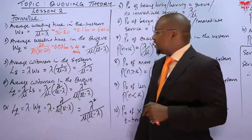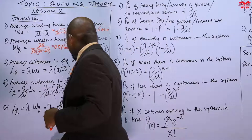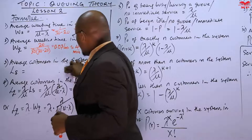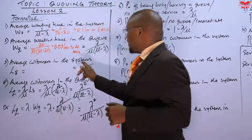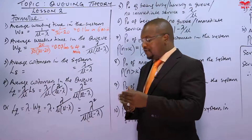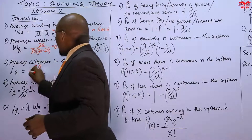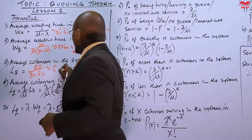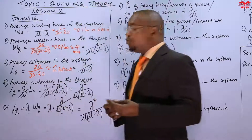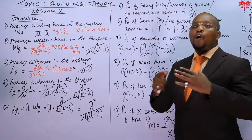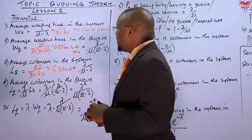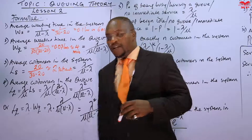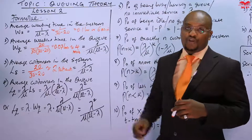Then, average customers in the system — how many customers do we expect? Using the main formula: arrival rate divided by the difference of service and arrival. This is 20 divided by 30 minus 20, which is 20 over 10, meaning 2 patients. So we expect to find 2 patients every time you come to the system. In the whole system we expect 2 patients: one must be with Dr. Rosemary getting the service or consulting, and there is another one at the service lounge.